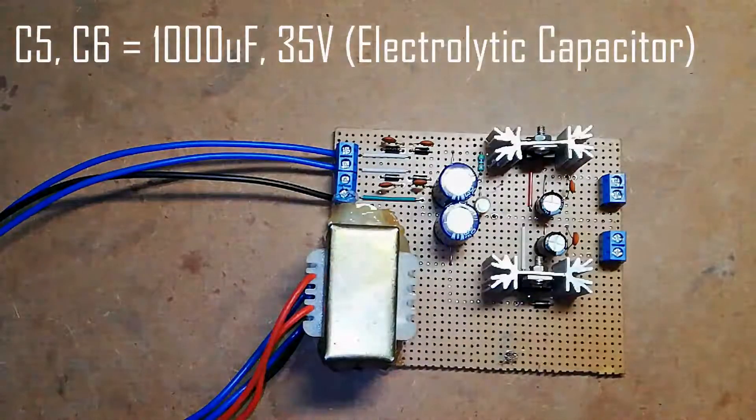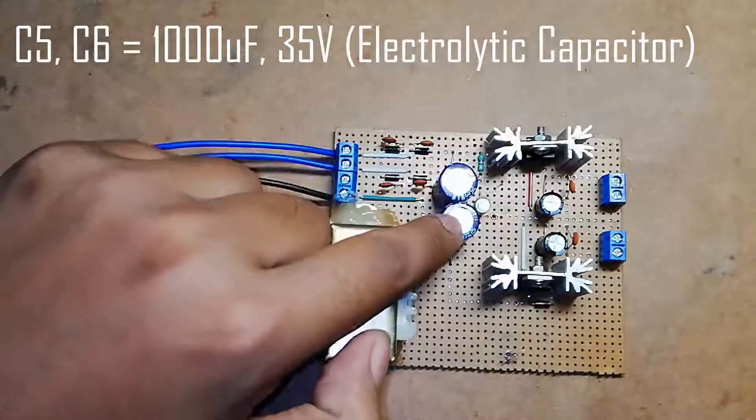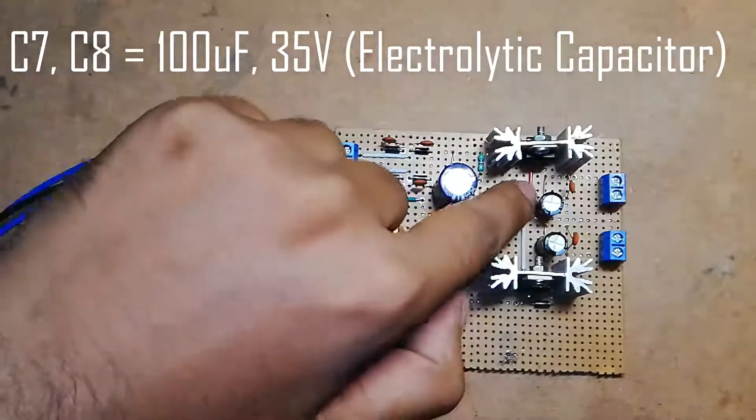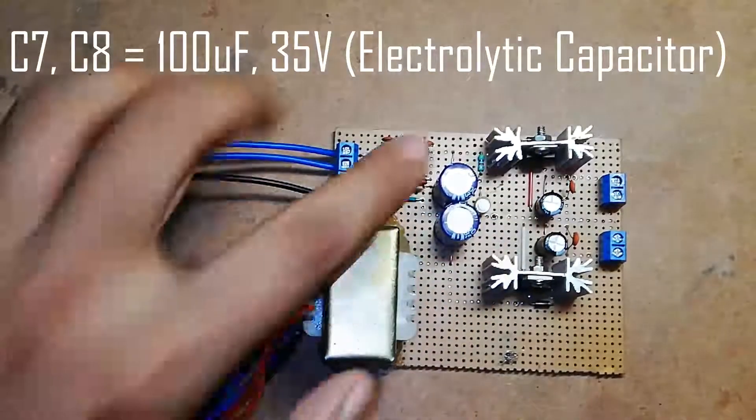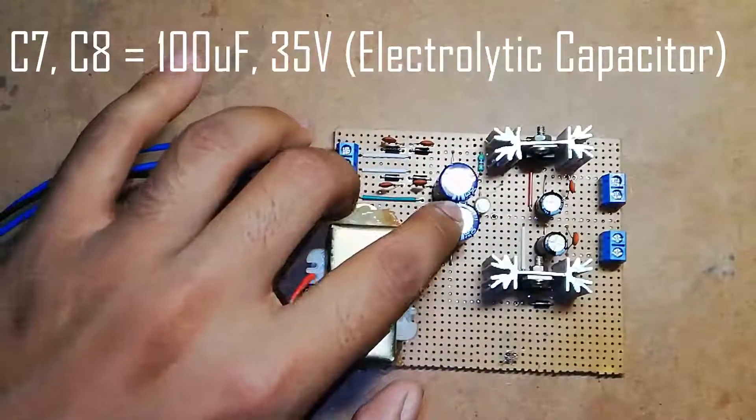Two electrolytic capacitors each of 1000 microfarad are used, C5 and C6, whereas two electrolytic capacitors each of 100 microfarad are also used, C7 and C8. These four electrolytic capacitors have a voltage rating of 35 volts.